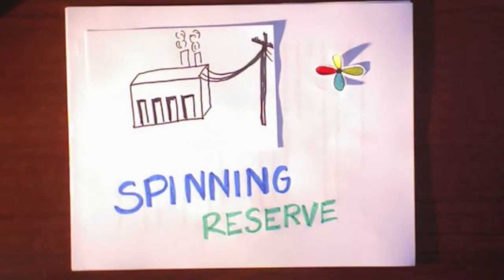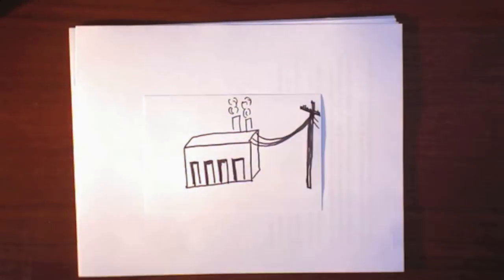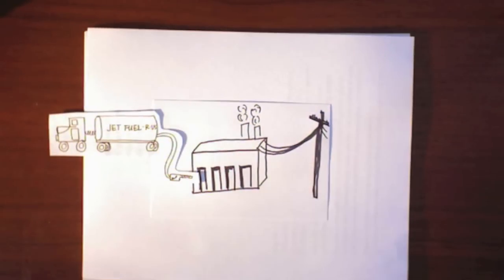That's called a spinning reserve. The grid can also call on fast start generators, plants which run on jet fuel and can go from dead cold to full power in 10 minutes. Those are non-spinning reserves, and some of them are super expensive to run.